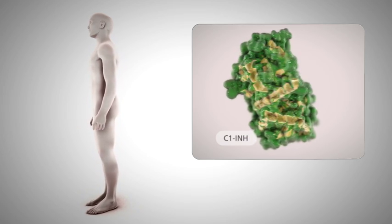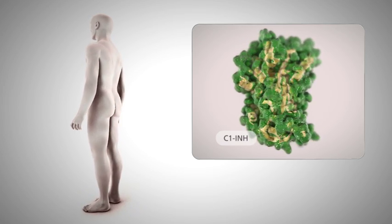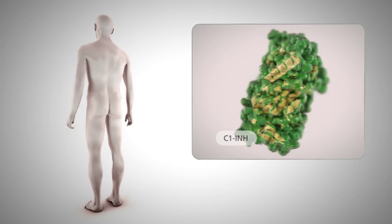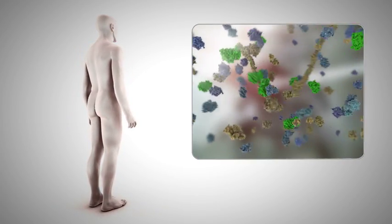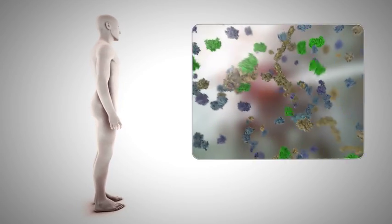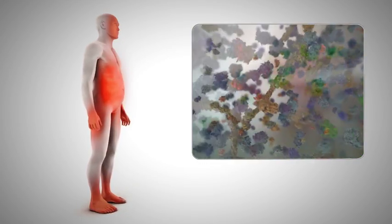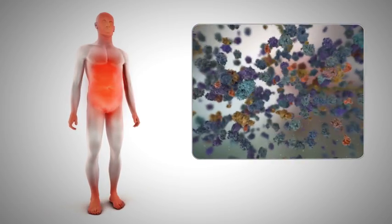However, in nearly 25% of diagnosed patients, the gene mutations occur de novo. C1 inhibitor is a plasma protein that downregulates several inflammatory cascades. Deficiencies in either the quantity or quality of this protein can lead to episodes of edema.